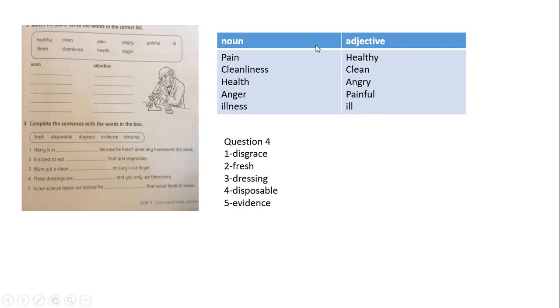The next question, the last one. We have these words we are going to put in the correct place. We have friend, fresh, disposable, disgrace, evidence, and dressing. Number one, Harry is a disgrace because he hasn't done any homework this week. It is best to eat fresh fruit and vegetables. Mom put a clean dressing on Lucy's cut finger.